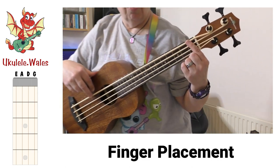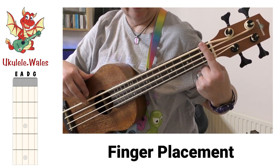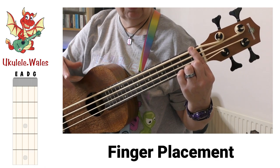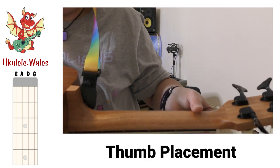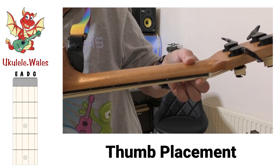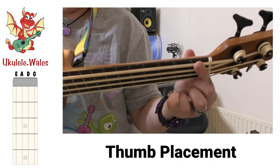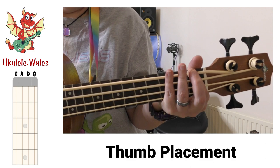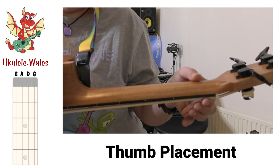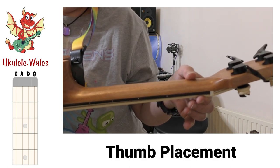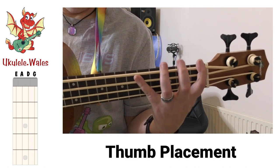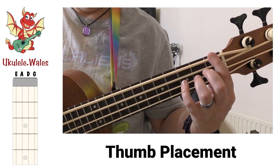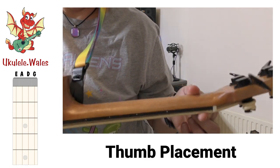We're going to try and play our F, which is our first fret on the thickest string. We've got to lay our first finger quite flat. My thumb is on the back in the middle of the neck. If you bring your thumb around the front you physically can't stretch your fingers. It's really important to get this from the beginning - thumb in the middle of the back means you can stretch your fingers much more. Our fingers go quite flat and our thumb goes in the middle of the back of the neck.